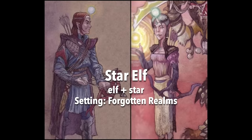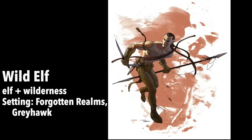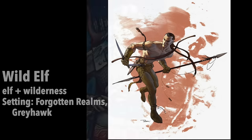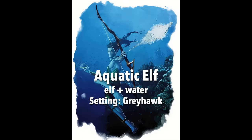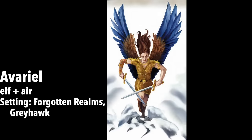Star elf is elf plus star — tall elves who dwell on a demi-plane near the feywild and battle magic-wielding monsters from the ethereal plane. Wild elf is elf plus wilderness — the original primal elf sub-race, or perhaps savages with no true elven culture. Gray elf is elf plus loftiness — tall, majestic, aloof, and arrogant, dwelling in isolated mountain citadels. Aquatic elf is elf plus water — essentially the same as sea elves, though traditionally they hold their breath for extended periods rather than breathe water. Avariel is elf plus air — flying elves with feathery wings, considered one of the eldest sub-races, most wiped out in conflicts with dragons.